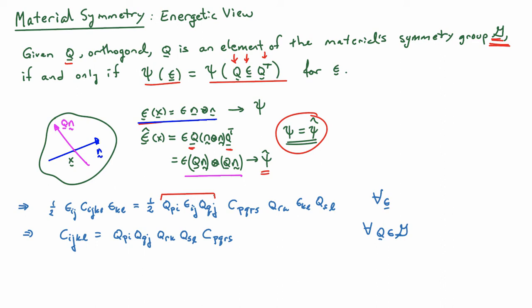Recall from before that if I have an orthogonal tensor, I can represent it in terms of my original basis and a new basis, which we'll call a star basis, by this expression. So EI outer product EI star, the star is a new basis and the Q can always be written down in this form.